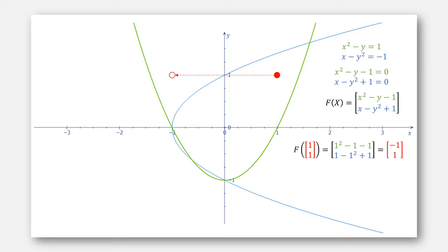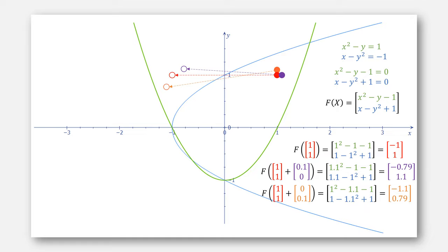Going back to this example from earlier, if we make a small change to 1, 1 going a little to the right in the x direction, this gives us that transformation. If we instead change a little upwards in the y direction, it gives us this transformation. What we would really like is a way to identify how a change in the input changes our output.